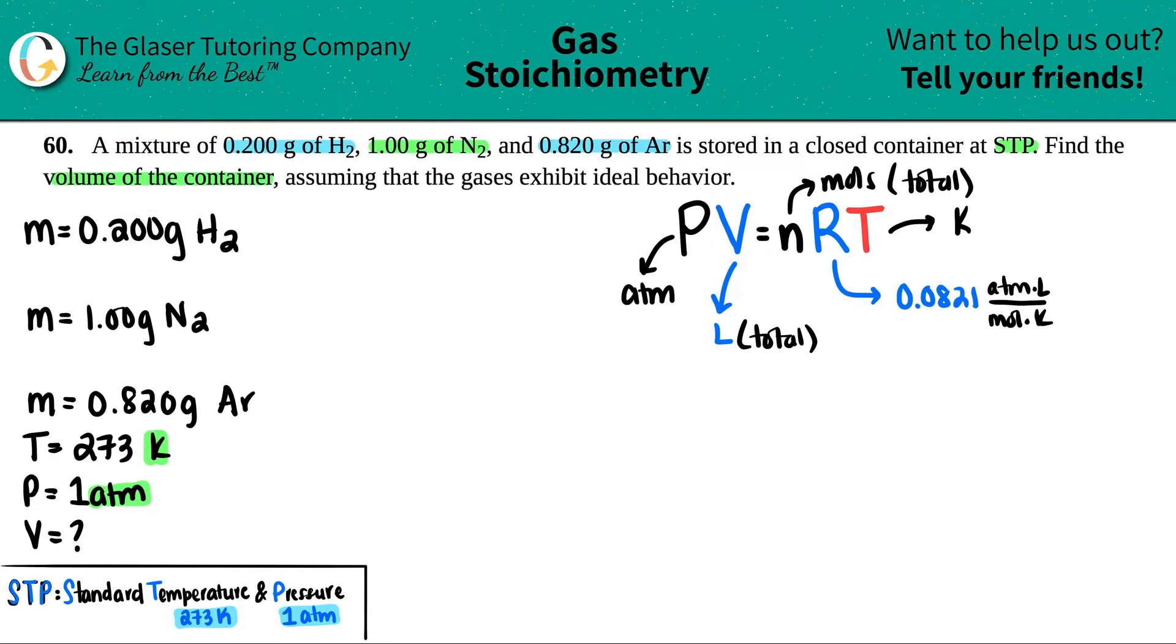They wanted to find the volume of the whole container. But just as a side note, let's just pretend they wanted the volume of N2 - you would then only put N2's moles in here. But since they wanted to find the volume of the whole thing, I gotta find all the total moles.